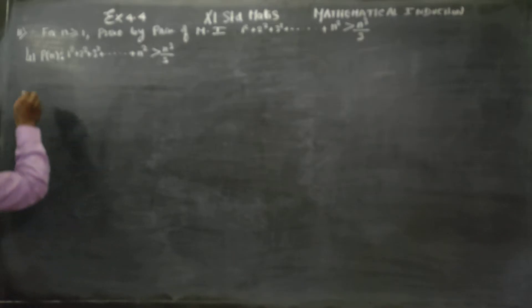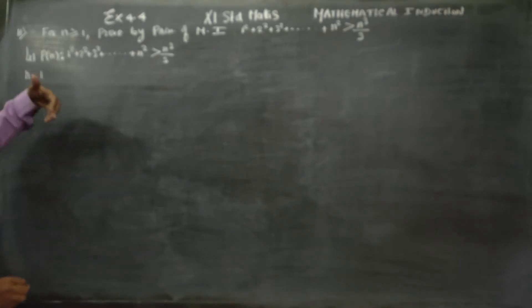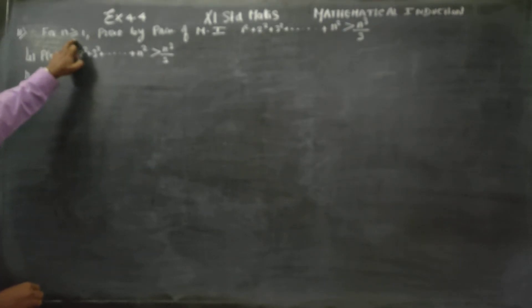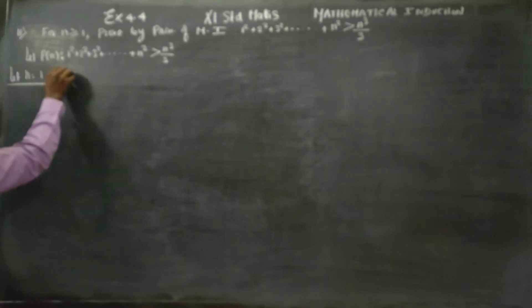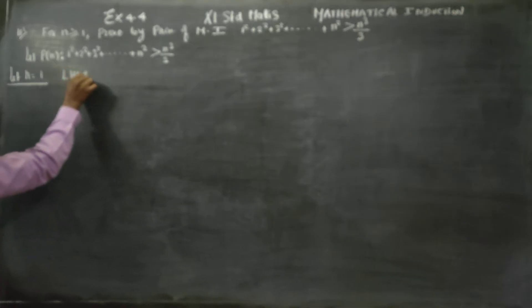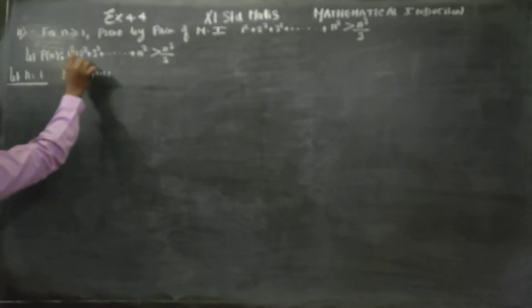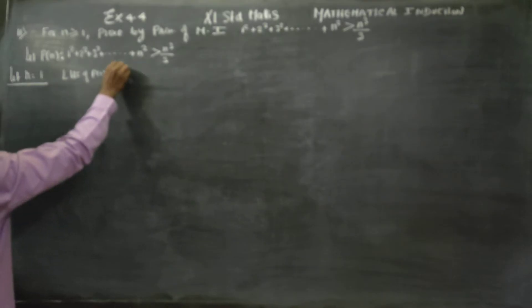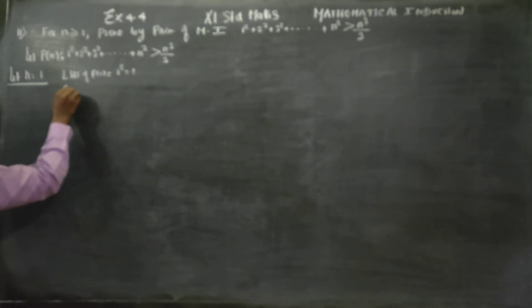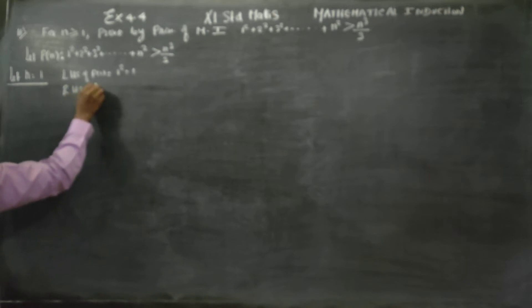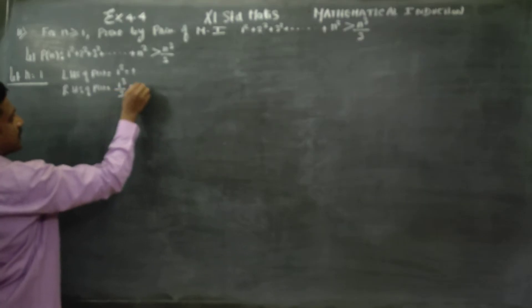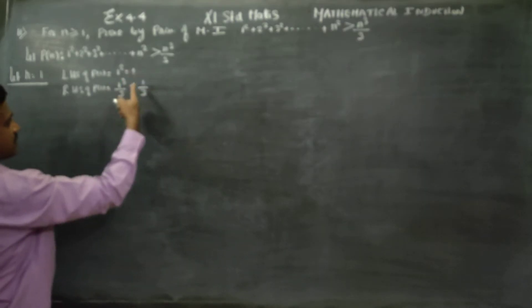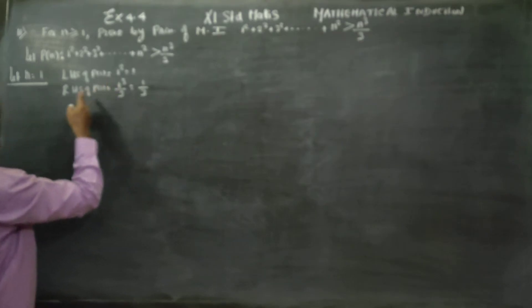First I am going to start with n equal to 1. For n greater than or equal to 1, the first term is when n equals 1. LHS of P(1) equals 1 squared, which is 1. RHS of P(1) equals 1 cubed by 3, which is 1 by 3. Since 1 is greater than 1 by 3, we compare and the base case holds.